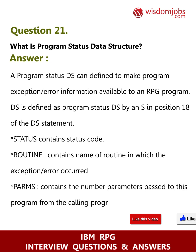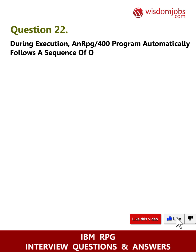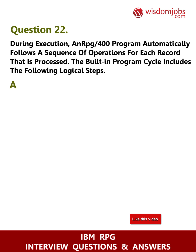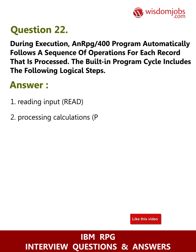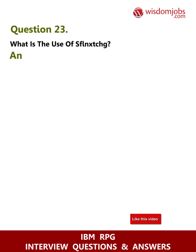Question 22: During execution, an RPG 400 program automatically follows a sequence of operations for each record that is processed. The built-in program cycle includes the following logical steps: one — reading input (READ), two — processing calculations (PROCESS), three — writing output (WRITE).